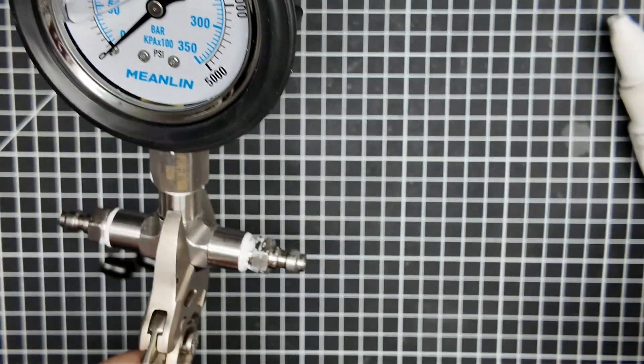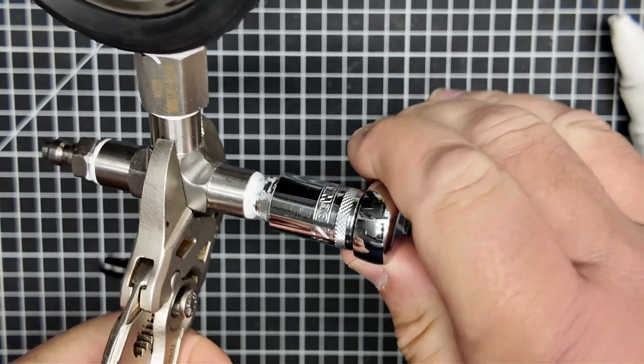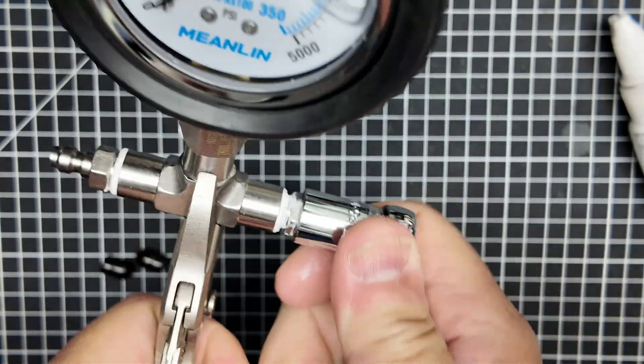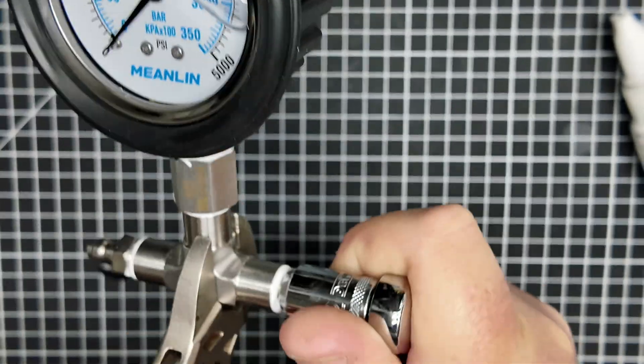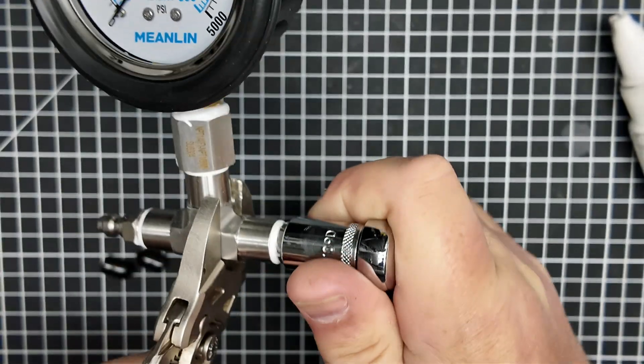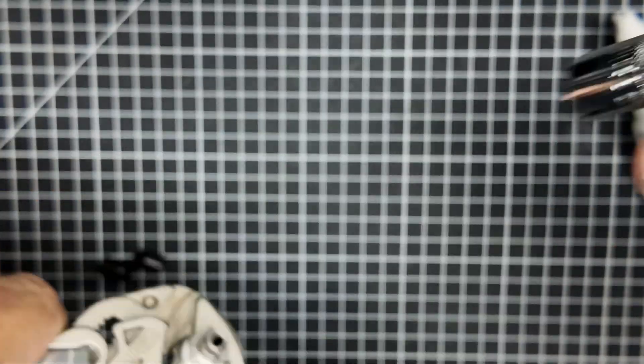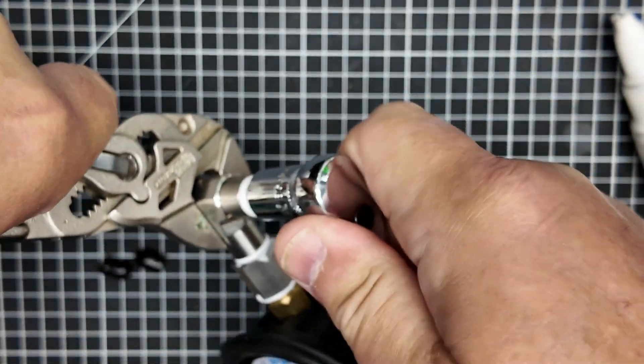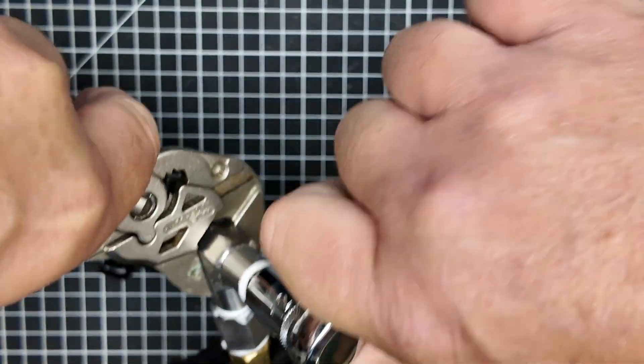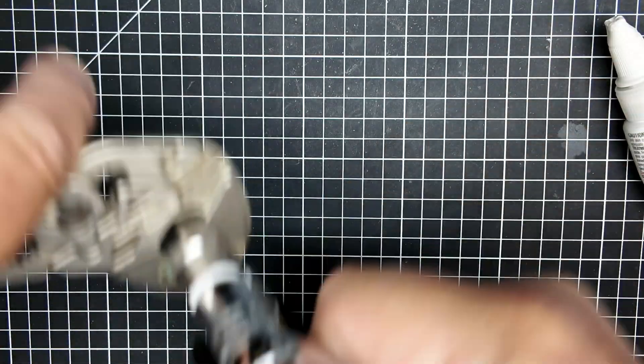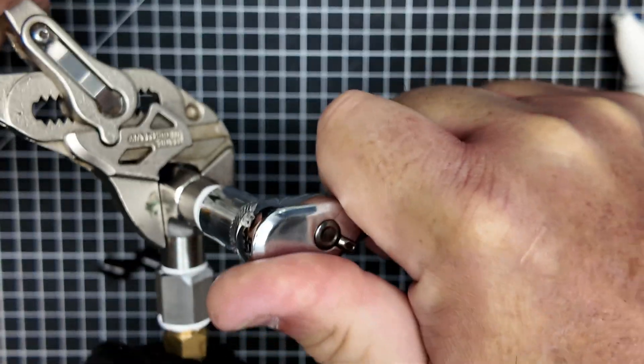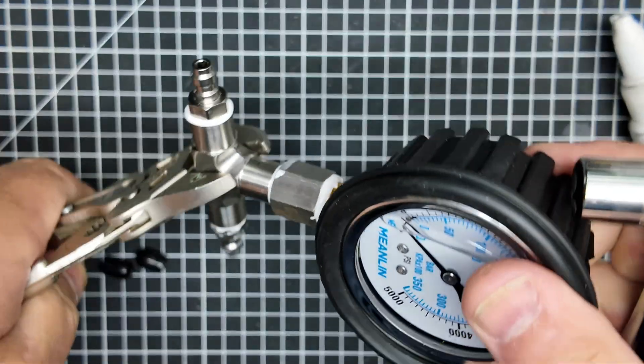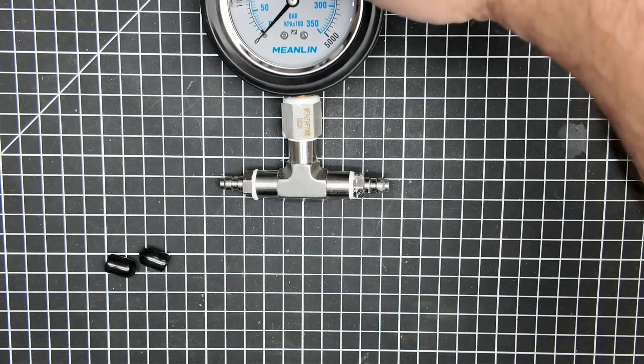Make sure you get these good and snugged up because remember, an NPT—national pipe taper—relies on it being tight in order to force those threads together to get the seal. That's how they work. So make sure you get the torque on there. I mean, don't snap them off, but you know, don't be a pansy about it either.